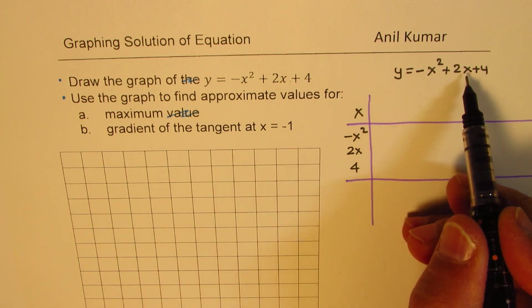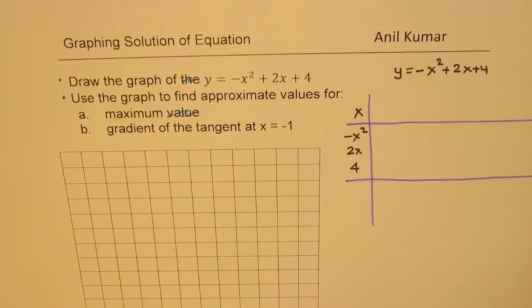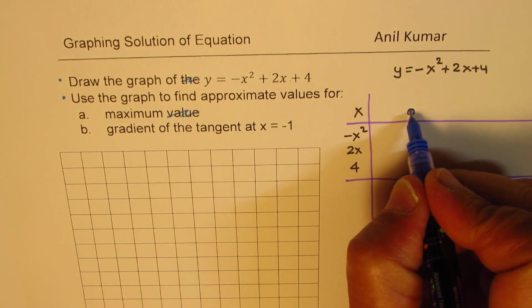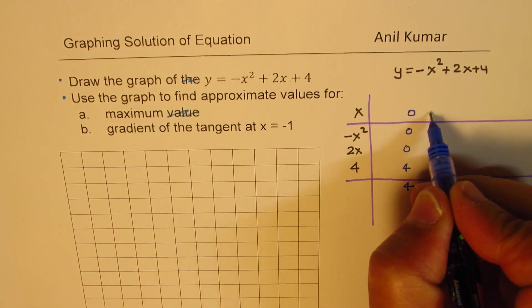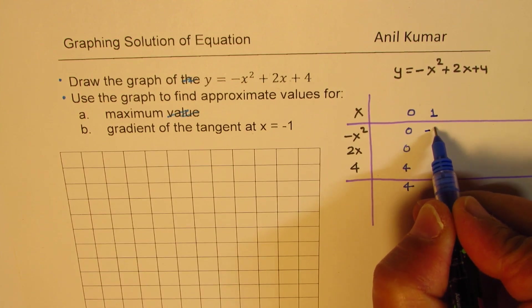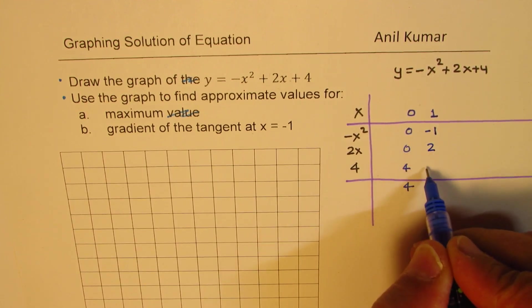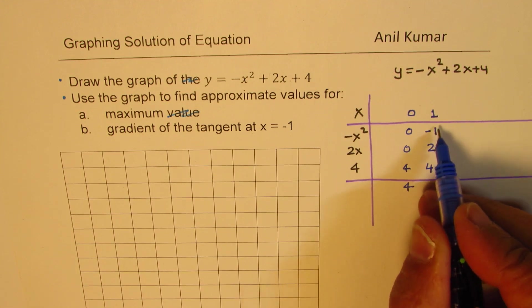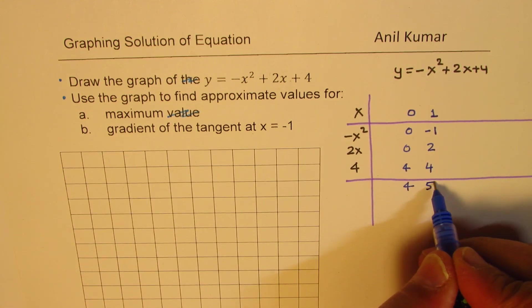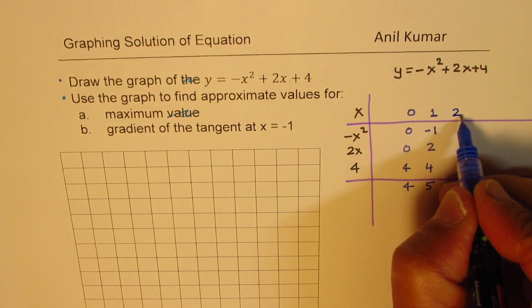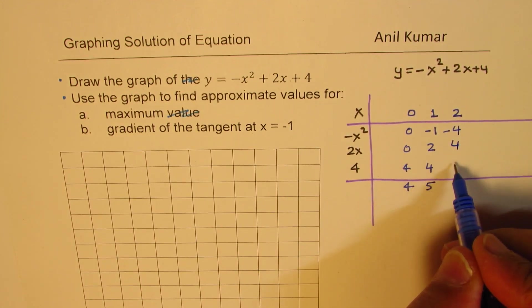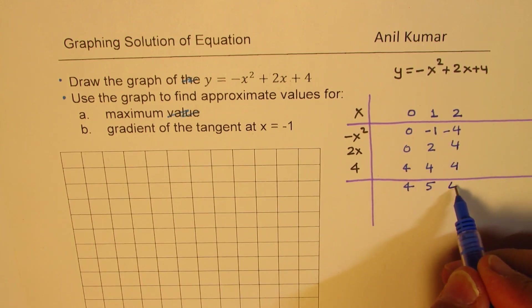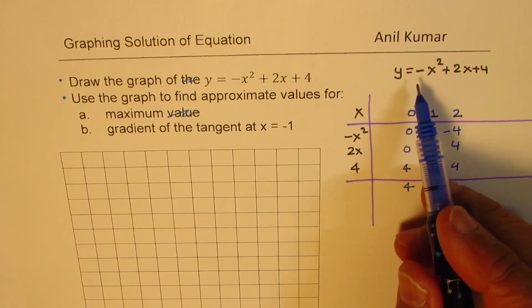It's a good practice to start with 0. If I put 0 for x, we get 0 here, 0 here, and 4. That is the y-intercept. For 1, it will be minus 1, this will be 2, that will be always 4. Now, we get 6 minus 1 as 5. For 2, we get minus 4, that is plus 4 and 4, and this cancels and we're left with 4.